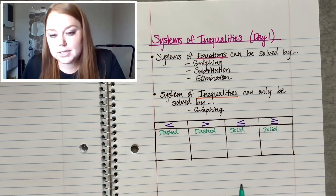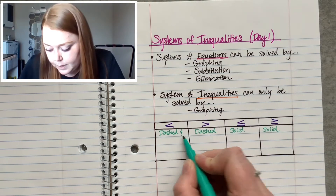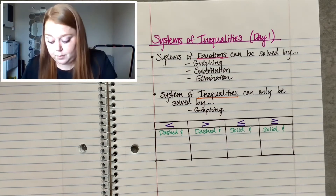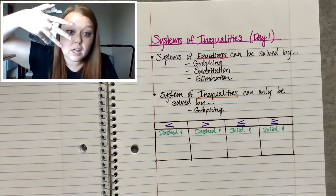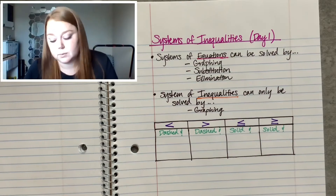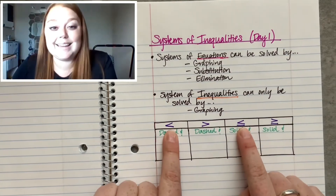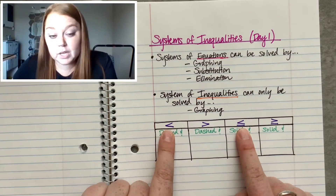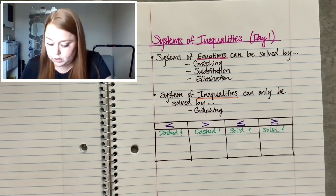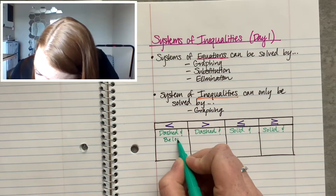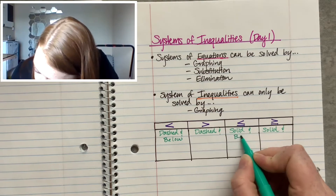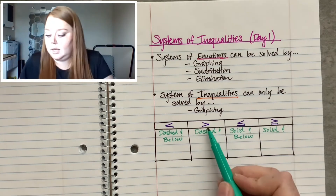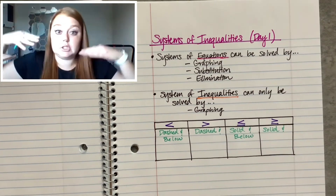The symbol also tells us where to shade. When you graph inequalities, you're either going to shade above the line or below the line depending on the symbol. The ones that say less than — they make little L's — those are going to be shaded below. And then your greater than symbols are shaded above.